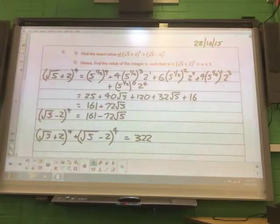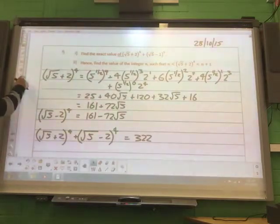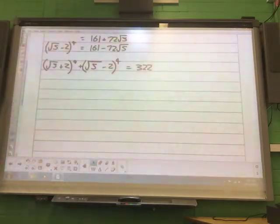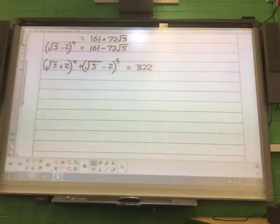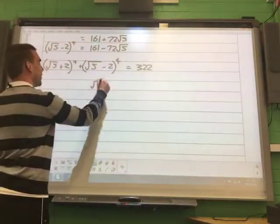So we need to show that n equals 321. Because n plus 1 is 322. Yes? So how do we do it? Divide in. I don't know.